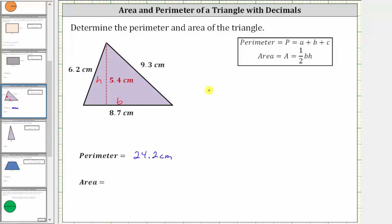And therefore, the area of the triangle is equal to 1/2 times the base, which is 8.7 centimeters, times the height, which is 5.4 centimeters.